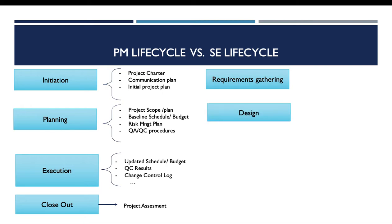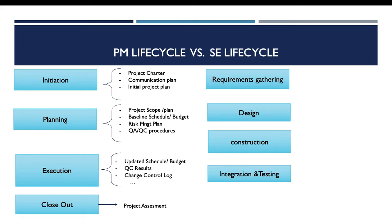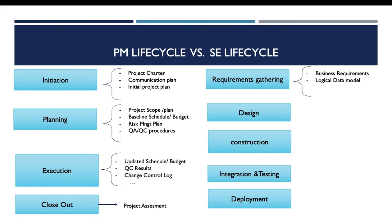The five phases of the software engineering lifecycle are: requirement gathering, design, construction, integration and testing, and deployment. For the requirement gathering phase, the deliverables are the business requirements, the logical data model, and a functional specification.